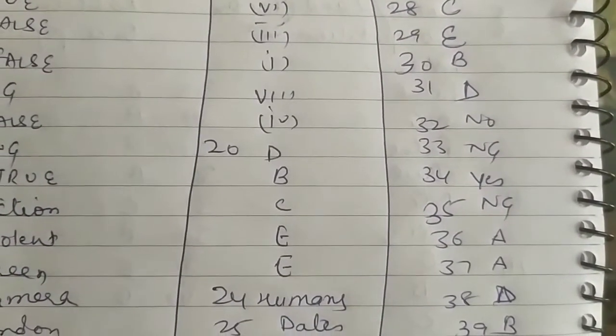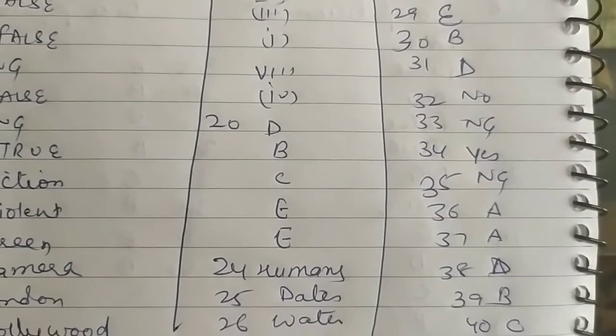Thirty-sixth is A, thirty-seventh is A, thirty-eighth is D, thirty-ninth is B, and fortieth is C.